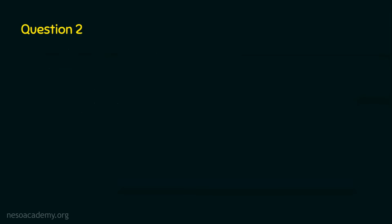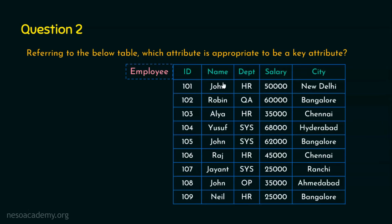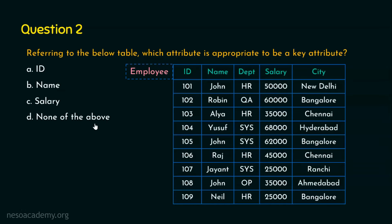Let's move on to question number two. Referring to the employee table, which contains attributes ID, name, department, salary, and city — which attribute is appropriate to be a key attribute? The options are: Option A, ID; Option B, name; Option C, salary; and Option D, none of the above. The right answer is Option A, ID, because every employee will have an ID and it will be unique throughout the organization.